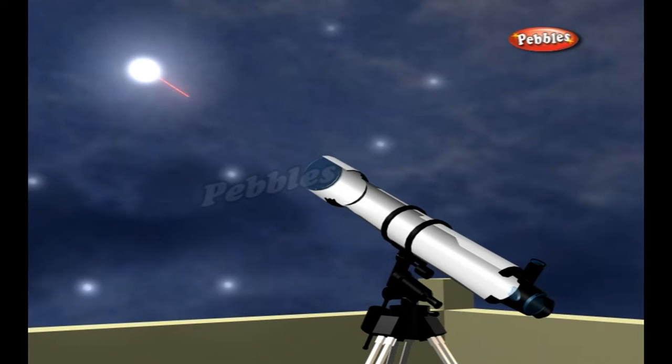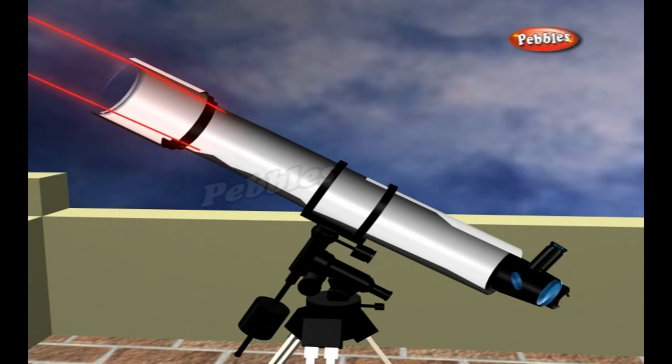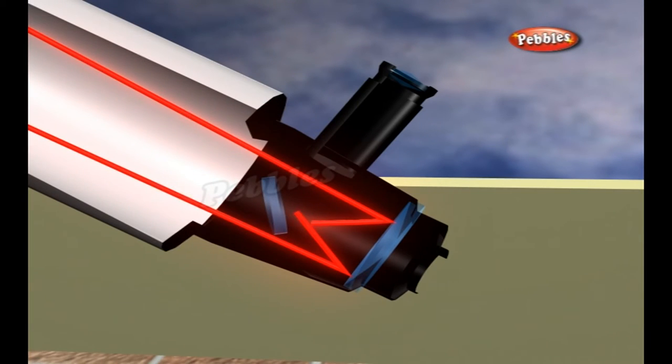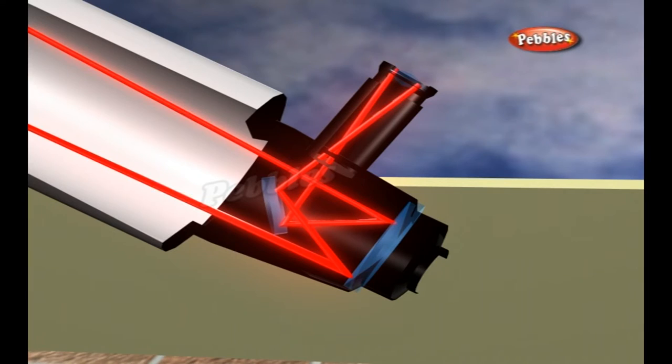This doesn't matter much when you're looking at Mars or the moon. But refracting telescopes used to see objects here on Earth often have another set of lenses to flip the image right side up again.